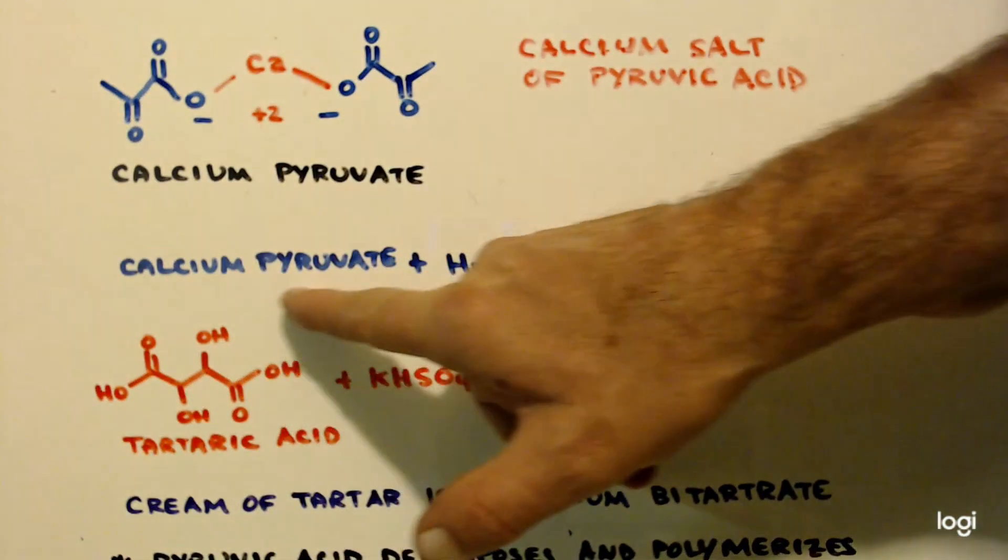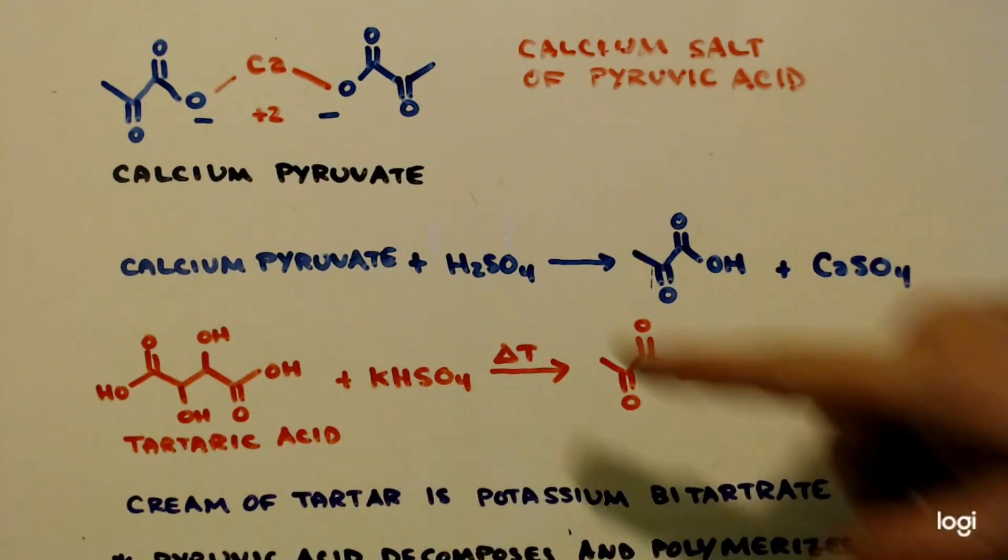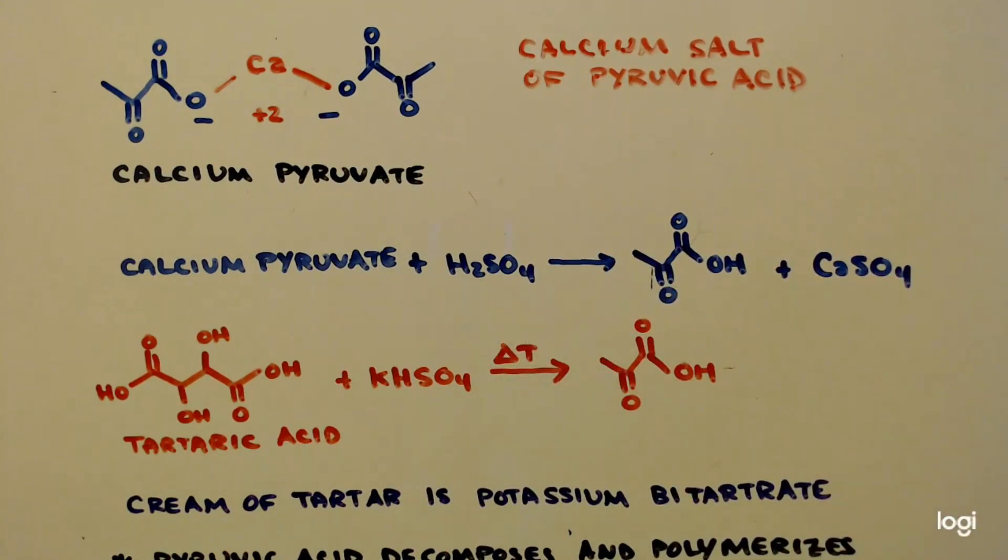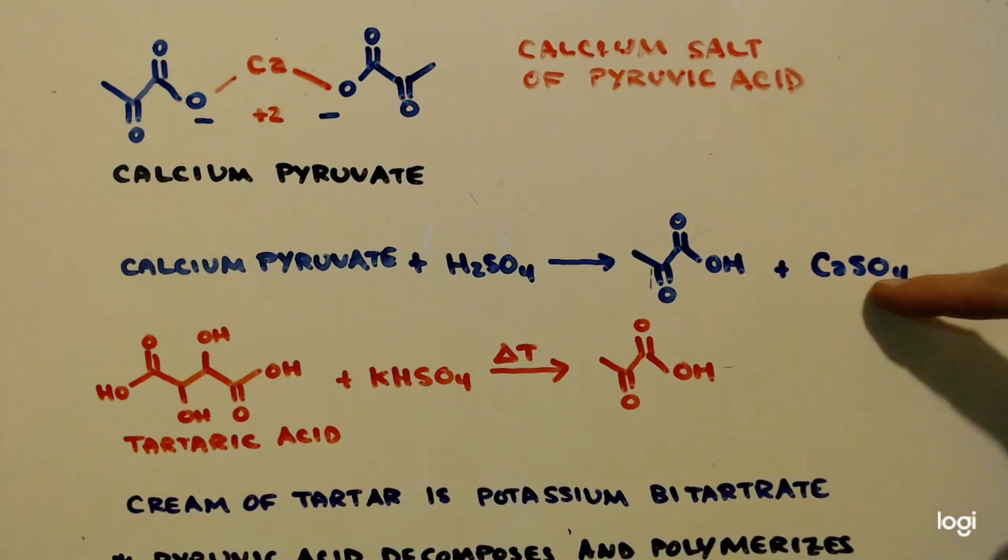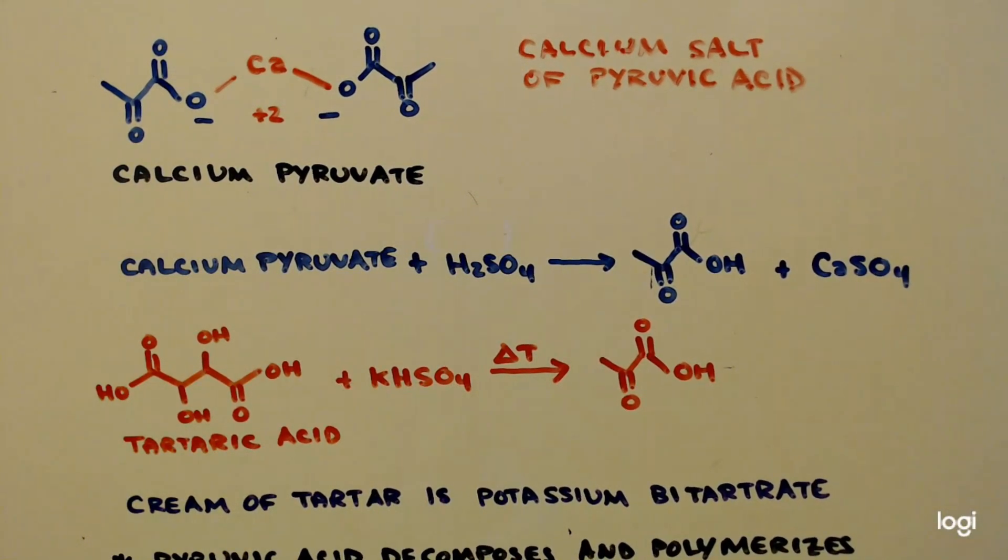Same here. If you take the calcium pyruvate, drip some sulfuric acid on it, you will make pyruvic acid and then the calcium and sulfate will go together.